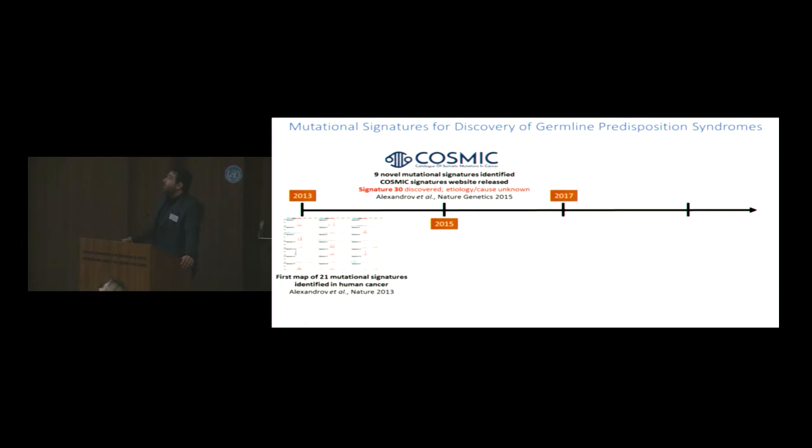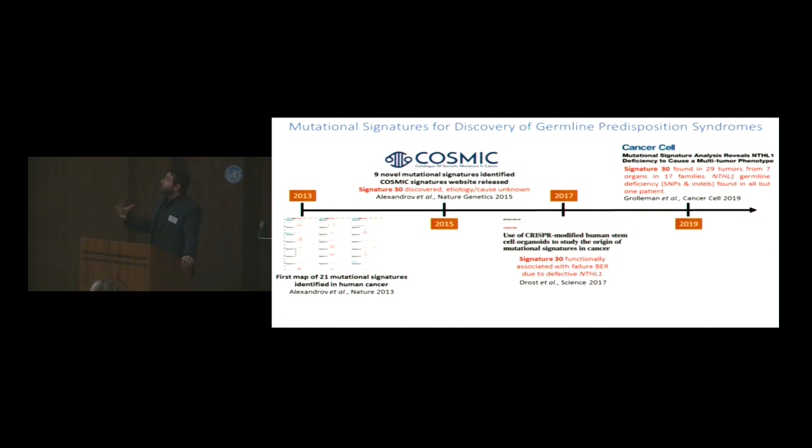Two years later, Hans Clevers' group in the Netherlands, in one of their CRISPR screens, they were able to reproduce it. When they introduced a defective NTHL1 base excision repair gene, they were able to actually generate signature 30. They were able to assign an etiology. Just this year, in 2019, just looking through different families with tumors, signature 30 was found in 29 tumors from seven organs in 17 different families. Each one of them was harboring a specific germline deficiency, all in NTHL1.